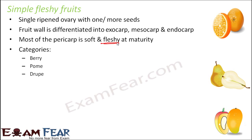These two categories work differently: based on origin, pear is a false fruit while mango is a true fruit. But based on structure, both pear and mango fall under simple fleshy fruits because they have a single ovary and a fleshy pericarp.